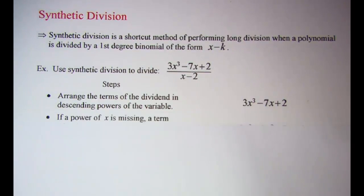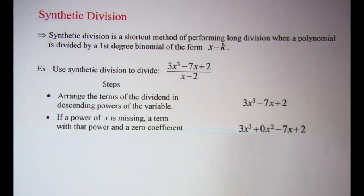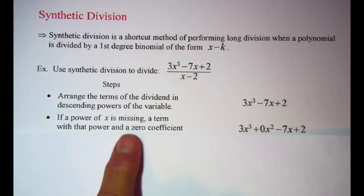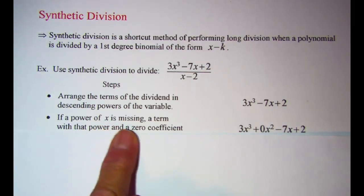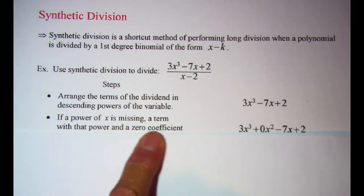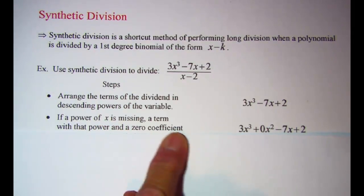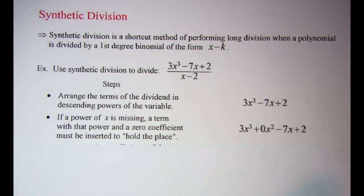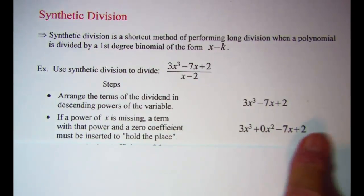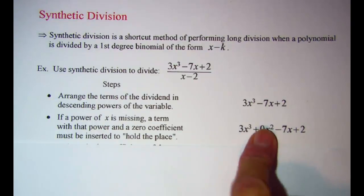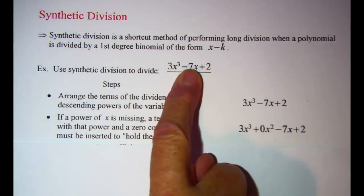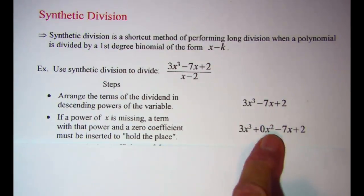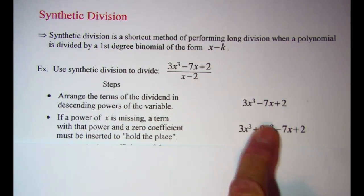The next step is to notice if you have any x terms that are missing. If a power of x is missing, a term with that power and a zero coefficient must be inserted to hold the place. In our problem, since we are missing the x squared term, we have to put 0x squared in that position to hold the place.